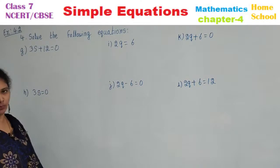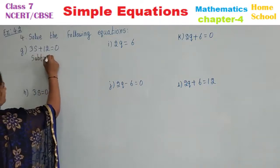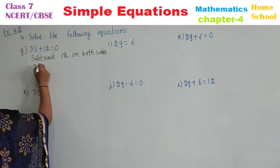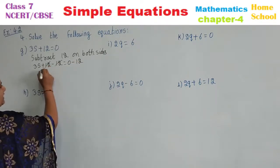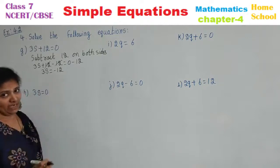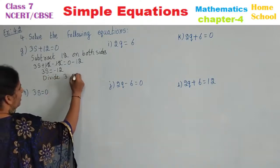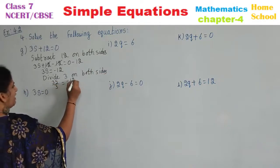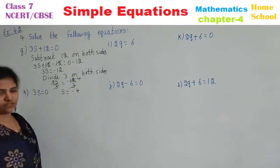Next sub-question: 3S plus 12 is equal to 0. Other than the variable you have plus 12, so subtract. Subtract 12 on both sides. 3S plus 12 minus 12 is equal to 0 minus 12. Plus 12 minus 12 cancels. 3S is equal to minus 12. Other than variable, 3 is multiplied — divide 3 on both sides. 3S by 3 is equal to minus 12 by 3. 3 fours are 12. Therefore S is equal to minus 4 is your answer.